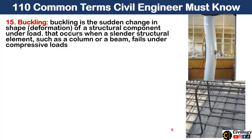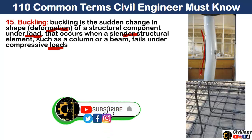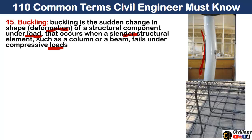Point 15 is buckling. Buckling is the sudden change in shape — deformation — of a structural component under compressive load. It occurs when a cylindrical structural element such as a column or beam fails under compressive load. As you can see in this picture, the column bends in one direction, and this deformation is called buckling. The same applies to a beam when compressive load is applied.